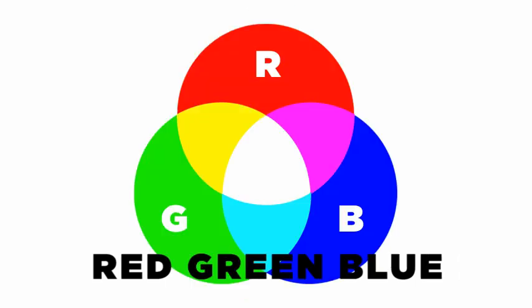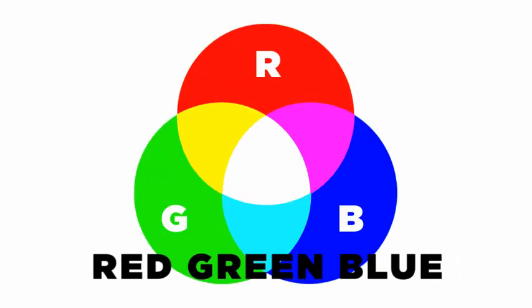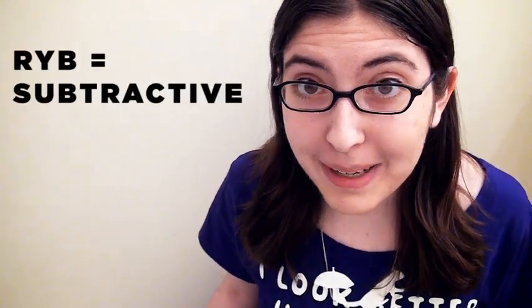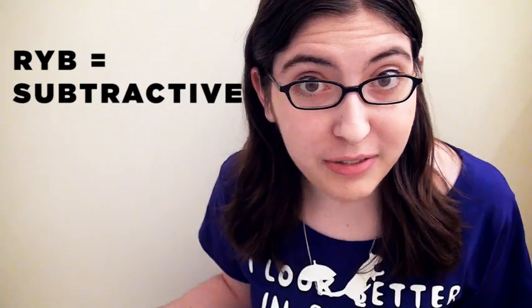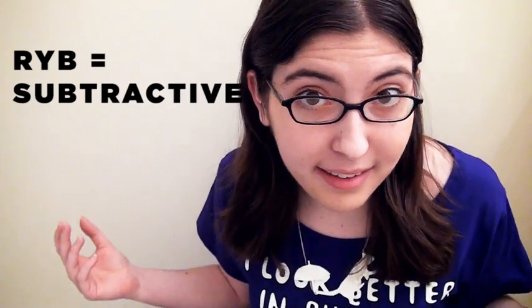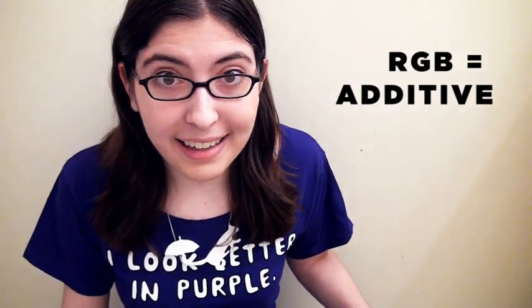We're going to switch from an RYB color model to an RGB color model, since we're viewing this on a screen. The RYB color model is subtractive, which means that light is reflected off of something like a painting or a poster. The RGB model is additive, which means that the colors are illuminated from some source like a computer or a television screen.